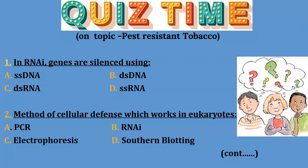It's quiz time again. Question 1: In RNAi, the genes are silenced using — Option A: dsRNA; Option B: dsDNA; Option C: dsRNA; Option D: ssRNA. The correct answer is Option C — dsRNA. Genes are silenced because of dsRNA, that is double-stranded RNA.